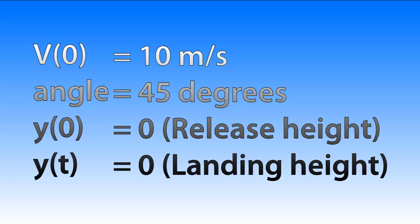Okay, let's now do an example with numbers. Let's set v0 to 10 meters per second. The angle to 45 degrees and y0 and yt are both 0, which means that we're launching from the ground and the landing will also be on the same height.